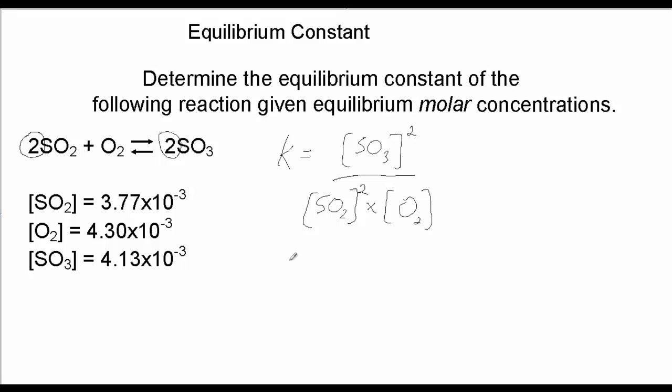So you plug these numbers in—I guess I'll do it off to the right. SO3 concentration is 4.13 times 10 to the minus 3, quantity squared.